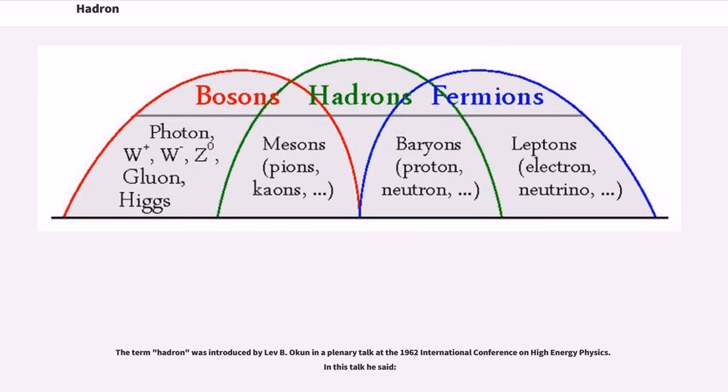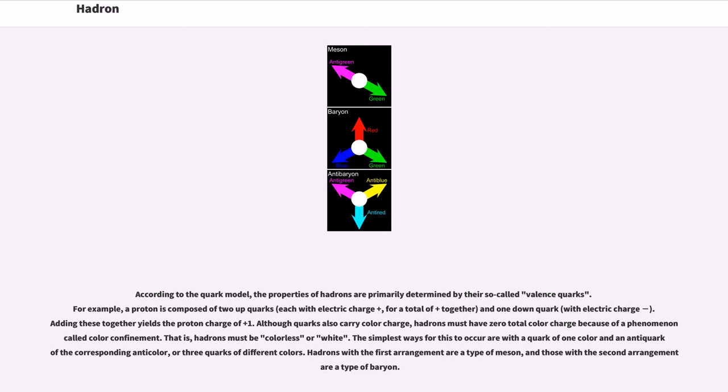The term 'hadron' was introduced by Lev Okun at the 1962 International Conference on High Energy Physics. According to the quark model, the properties of hadrons are primarily determined by their valence quarks. For example, a proton is composed of two up quarks (each with charge +2/3) and one down quark (with charge −1/3), which together yield the proton's charge of +1.